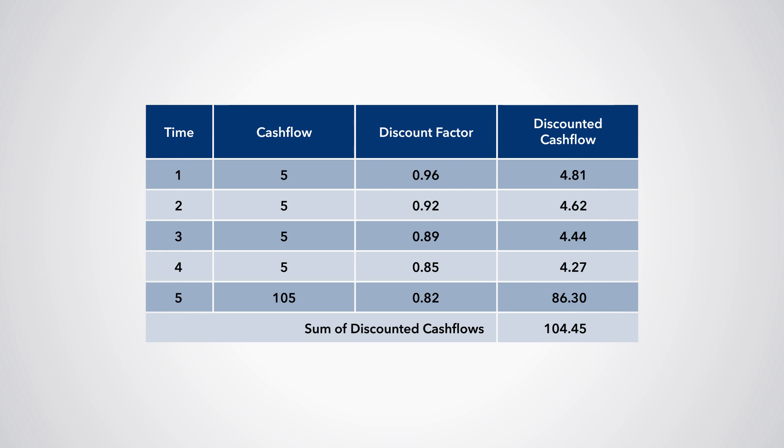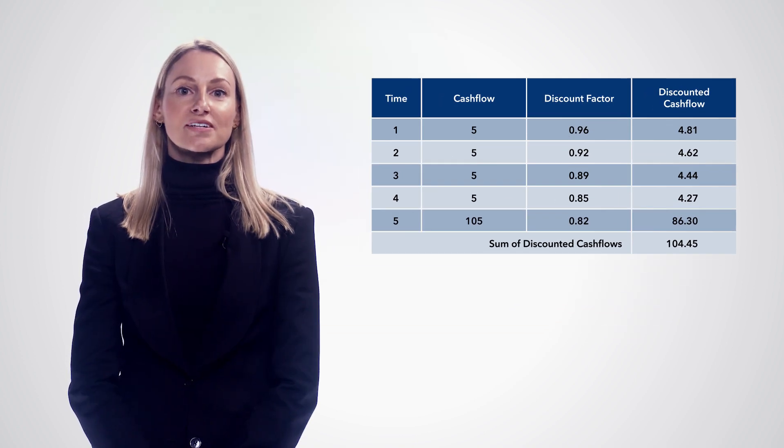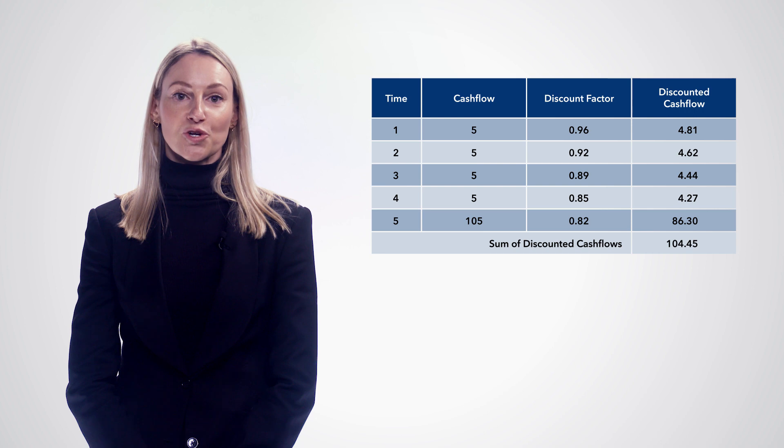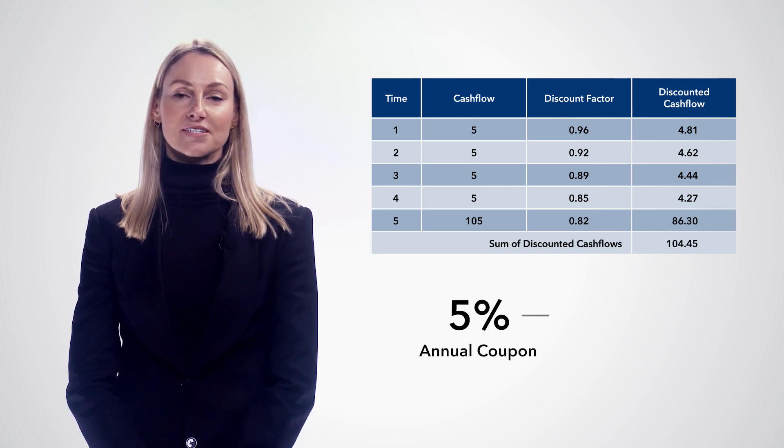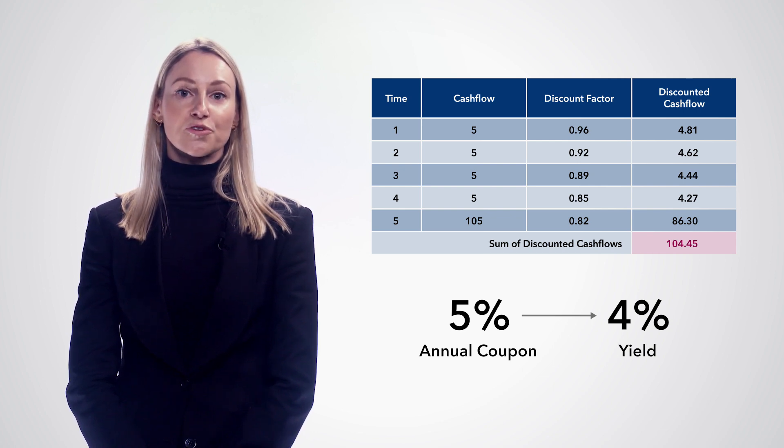Working out the yields may take some practice as it requires you to iterate to find a solution. We can finish by noting that the yield is often different from the coupon. In this example, while the coupon is 5%, the yield is 4%. Since the bond is priced at 104.45, the yield is lower than the coupon as you have paid more than $100 for a bond with a face value of $100.